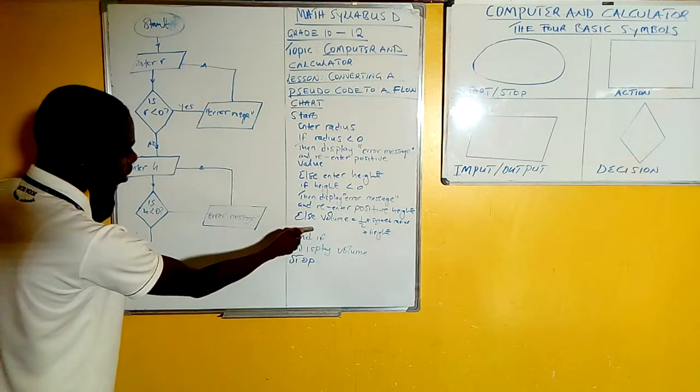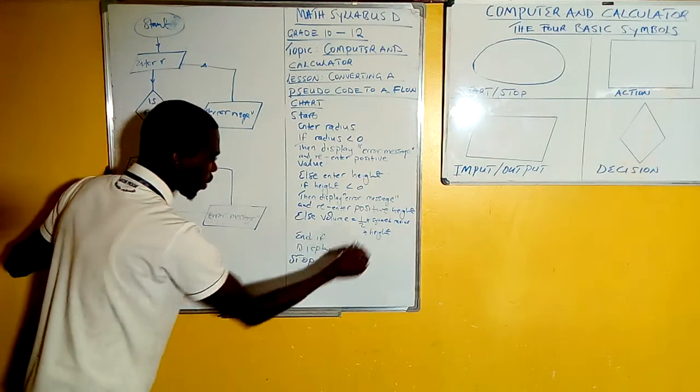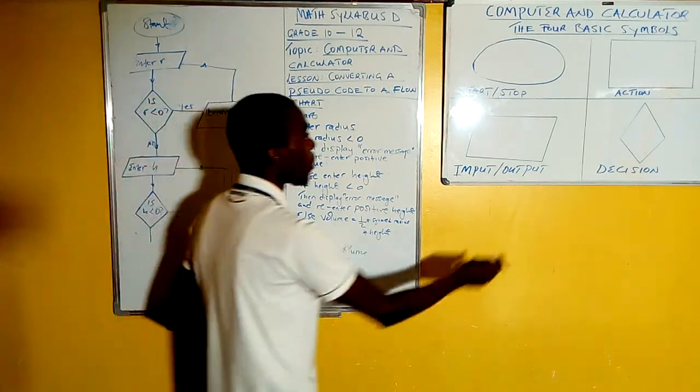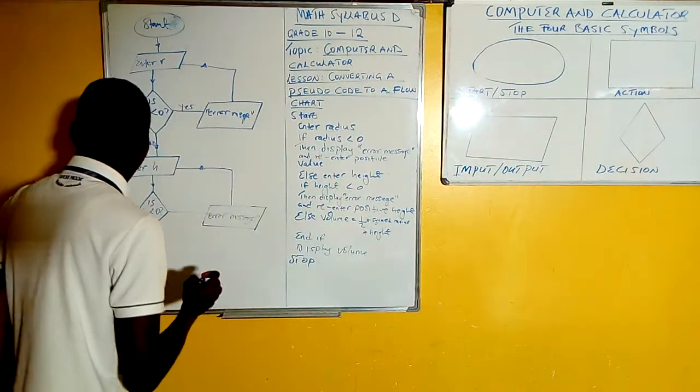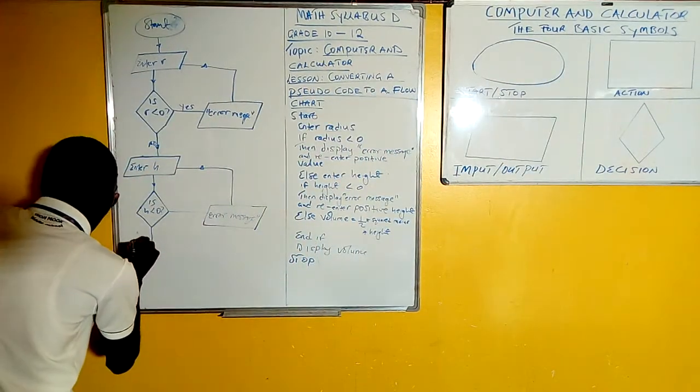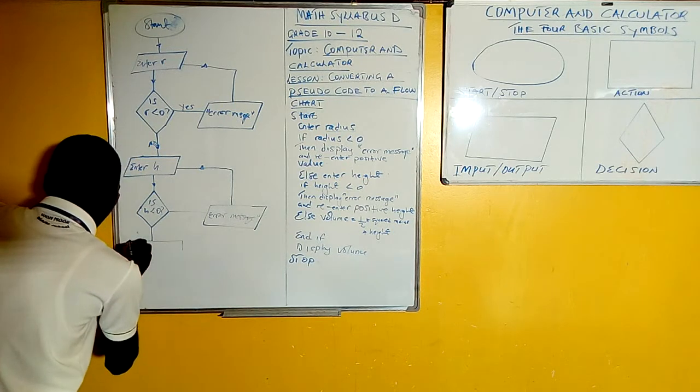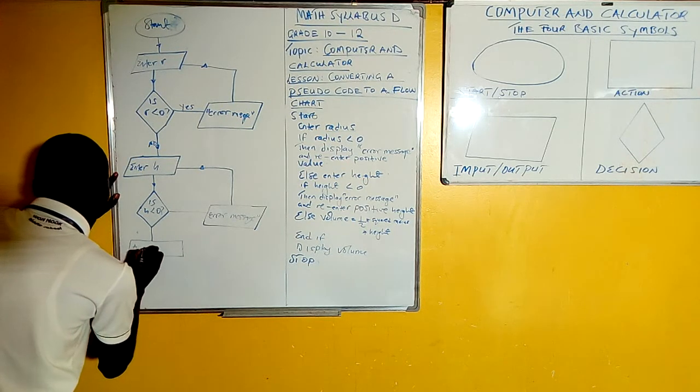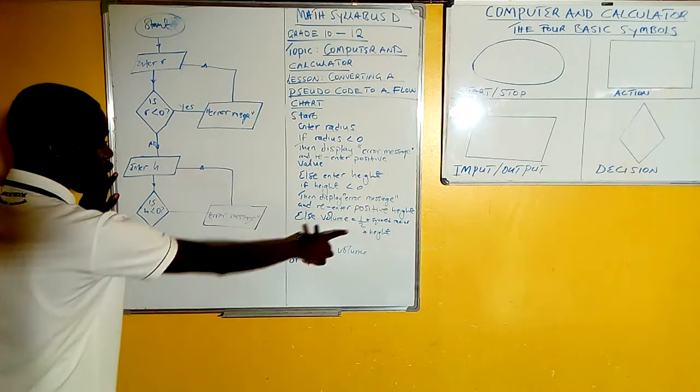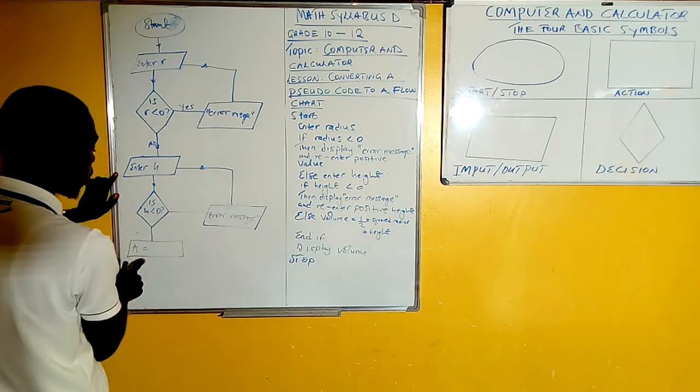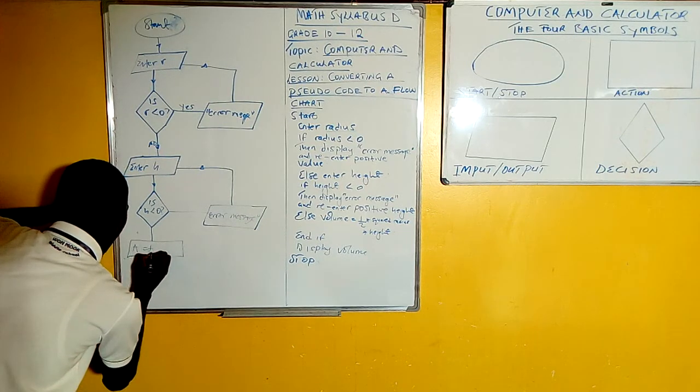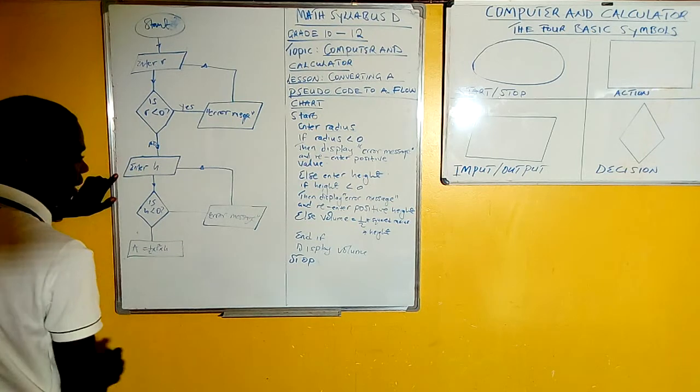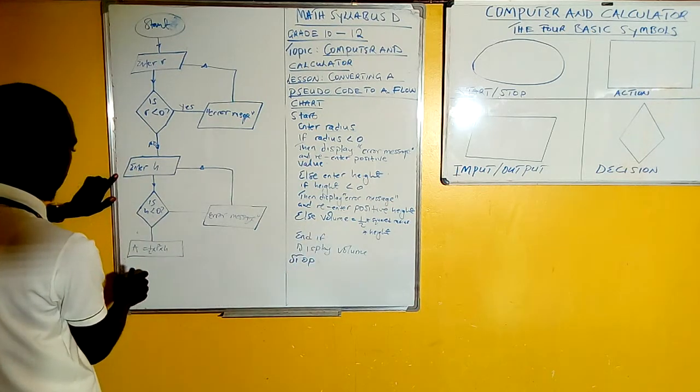Then here it says else volume is equal to this one. The moment you see a formula, then you know that you have to apply the action box, which is a rectangle. So the moment you see that one, you put in this one. This is where we're going to say area. And like I say, on the pseudocode we find the words, but here we just find the symbols. So this one would be area equals pi r squared multiplied by height. That is what you're writing here.